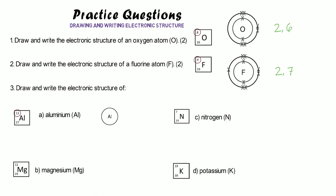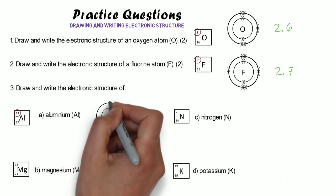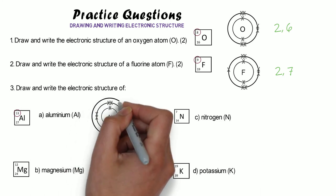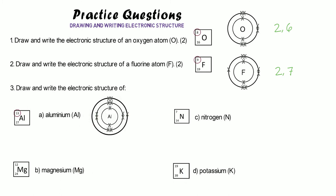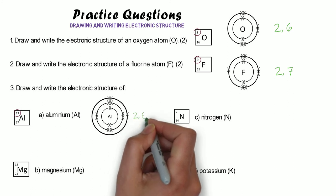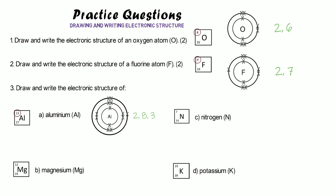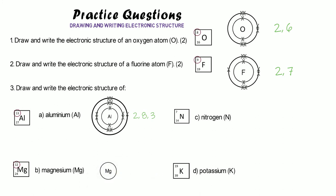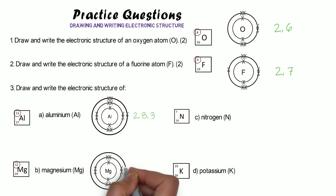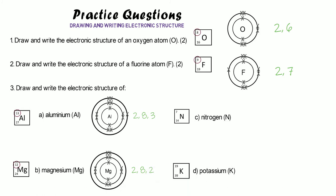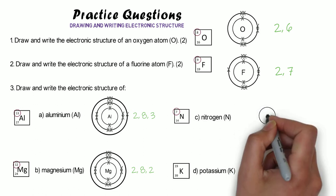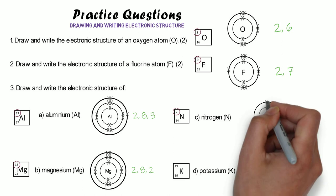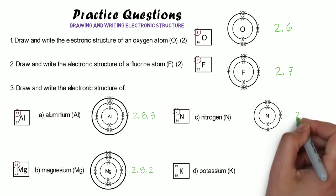Aluminium has thirteen electrons. We have two in the centre, then eight in the next shell — that makes ten — and we still have three left, so in our third shell we put three. We write this structure as 2,8,3. That makes sense because aluminium is in group three. Magnesium has twelve electrons: two in the centre, eight in the next shell makes ten, then two left over in a third shell. Written as 2,8,2 — and that makes sense because magnesium is in group two. Nitrogen has seven electrons: two in the centre and five in the next shell, written as 2,5.